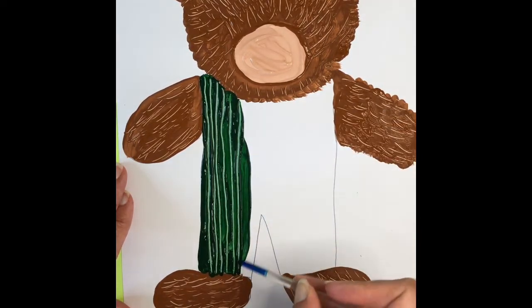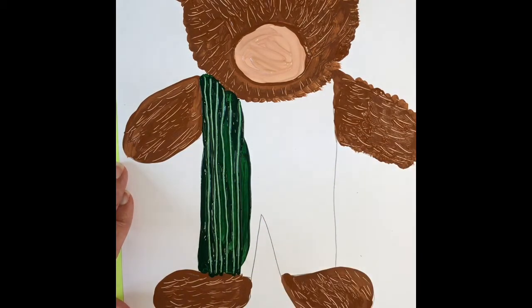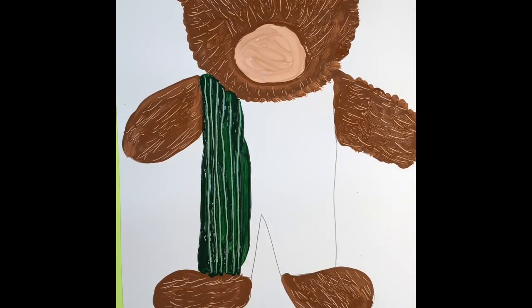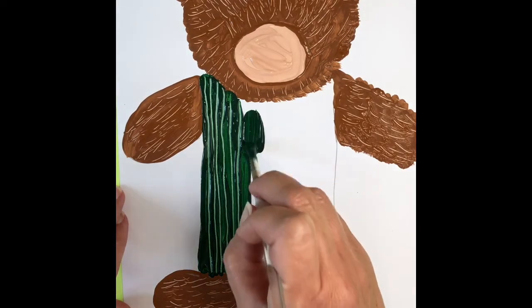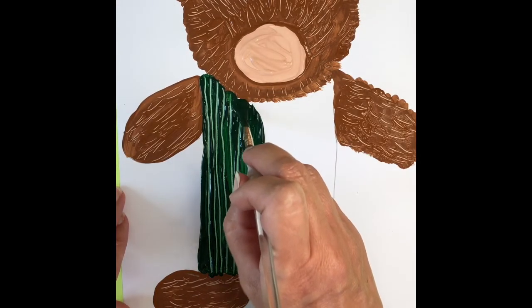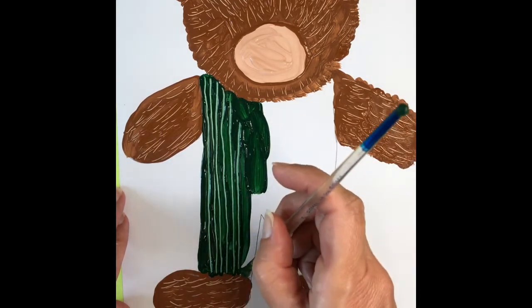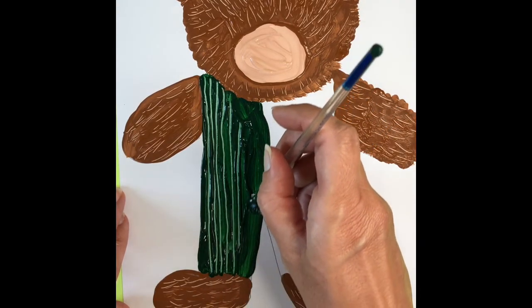And I'm doing just a little section at a time so that I don't let the paint dry because this technique does not work if the paint is dry. So if it stops working for you, you might need to put a little bit more wet paint on top and then you'll be able to add your stripes.